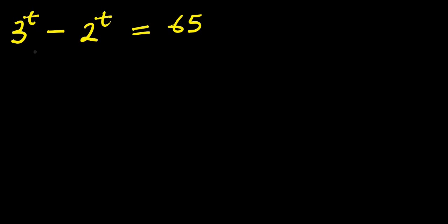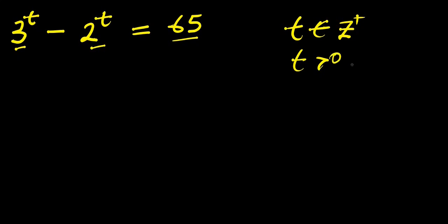How to solve this exponential problem: we have 3 power t minus 2 power t equals 65. We are solving for the value of t that will satisfy this equation. Remember that t is a positive integer and t is greater than zero. Based on these conditions, we need to solve this particular exponential problem.